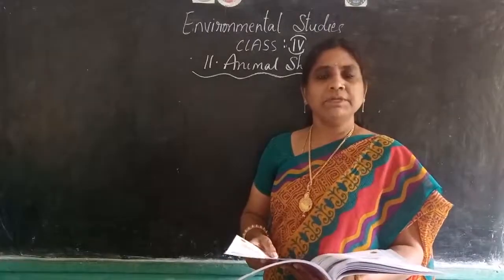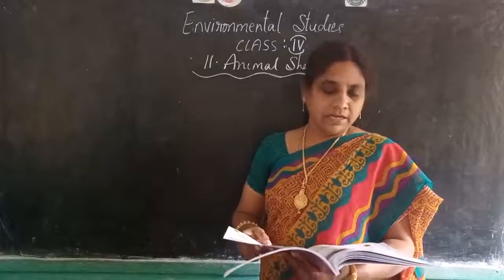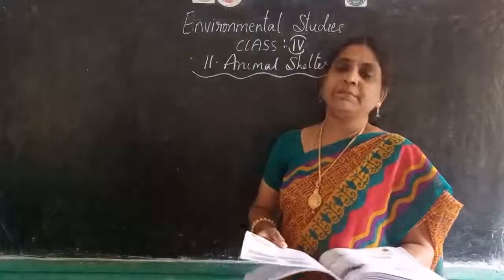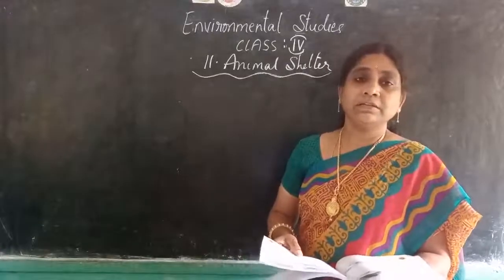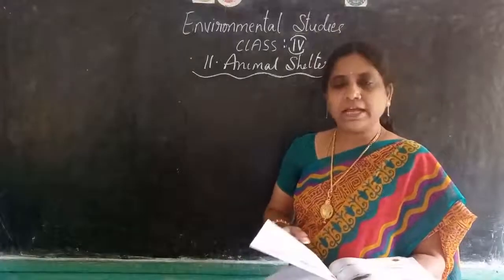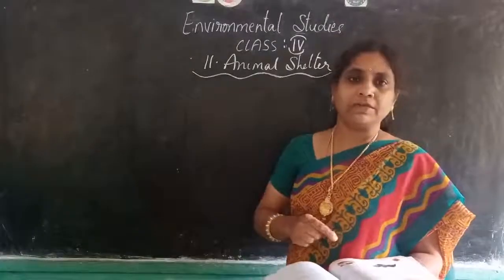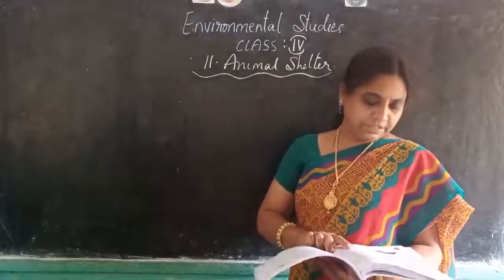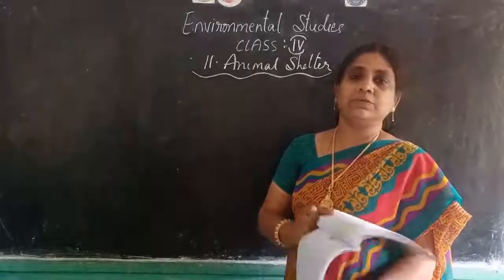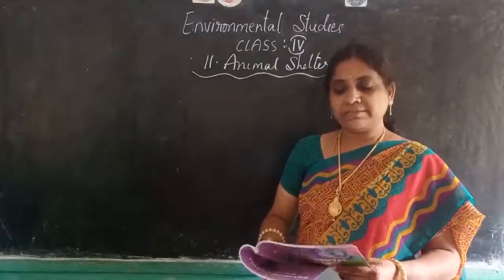Terrestrial animals means they live on the land, and arboreal animals means mostly they live on trees, and aquatic animals means they live in the water itself.